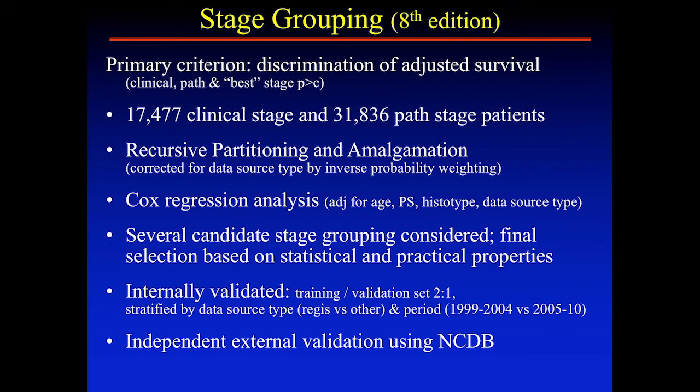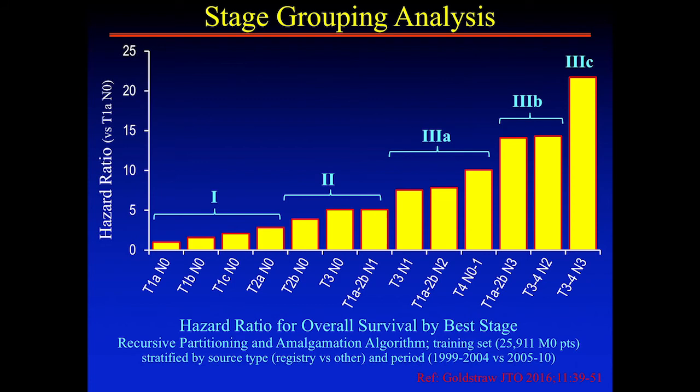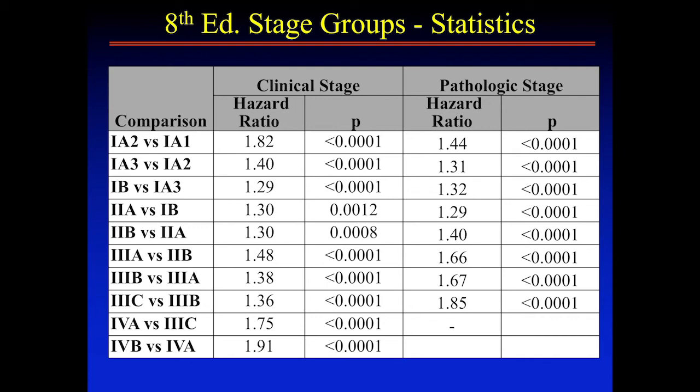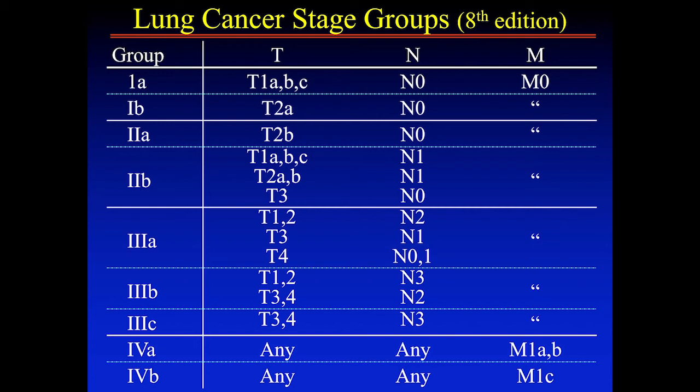For the stage groups, a lot of analysis went into this — recursive partitioning regression analysis, various potential grouping methods — with both statistical and practical considerations taken into account, internally and externally validated. Looking at the survival data, we have to recognize there's some variability within a stage group, and prognosis is driven by many factors beyond just stage.